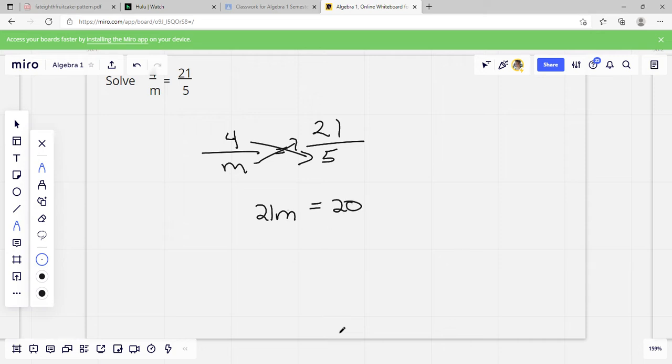And then to solve this, this means 21 times M, we're just going to divide by 21. So M is going to equal 20 over 21. So where we have the two numbers, we multiply, and then the one that is diagonal from our variable is the one we divide.